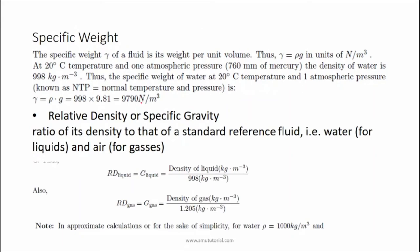Another important property of fluid which we will be using frequently in our hydraulics calculations is specific weight. Specific weight is defined as the weight per unit volume of a fluid, denoted by gamma. So gamma is equal to weight of fluid per unit volume of fluid. The SI unit for specific weight is Newton per meter cube.